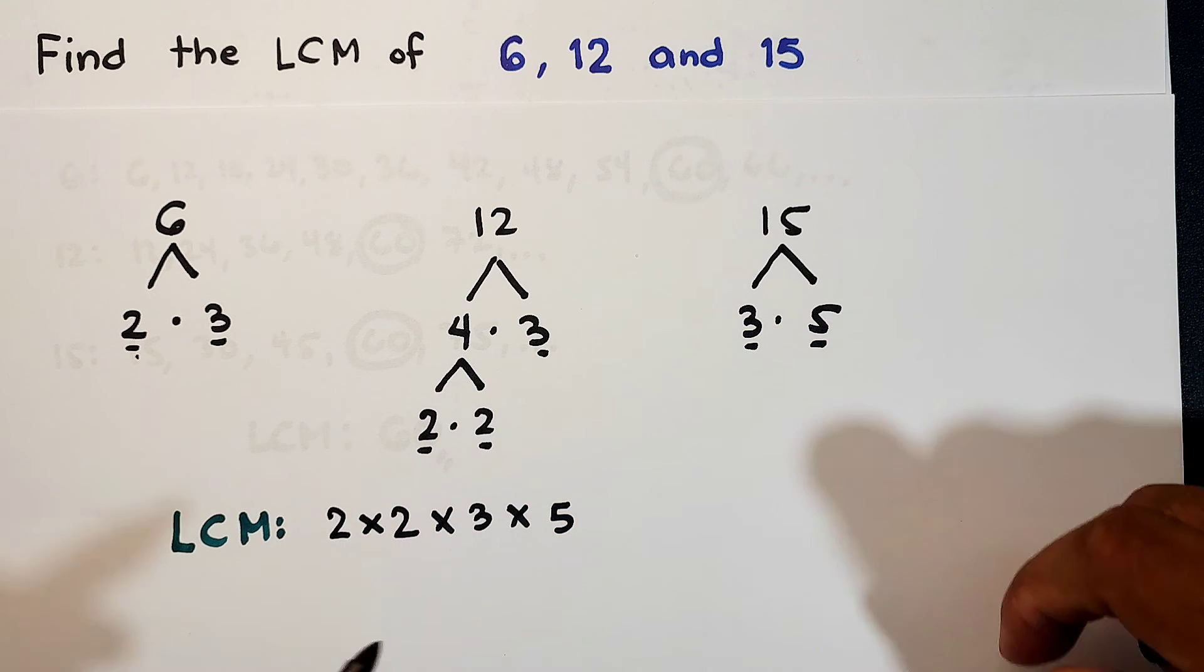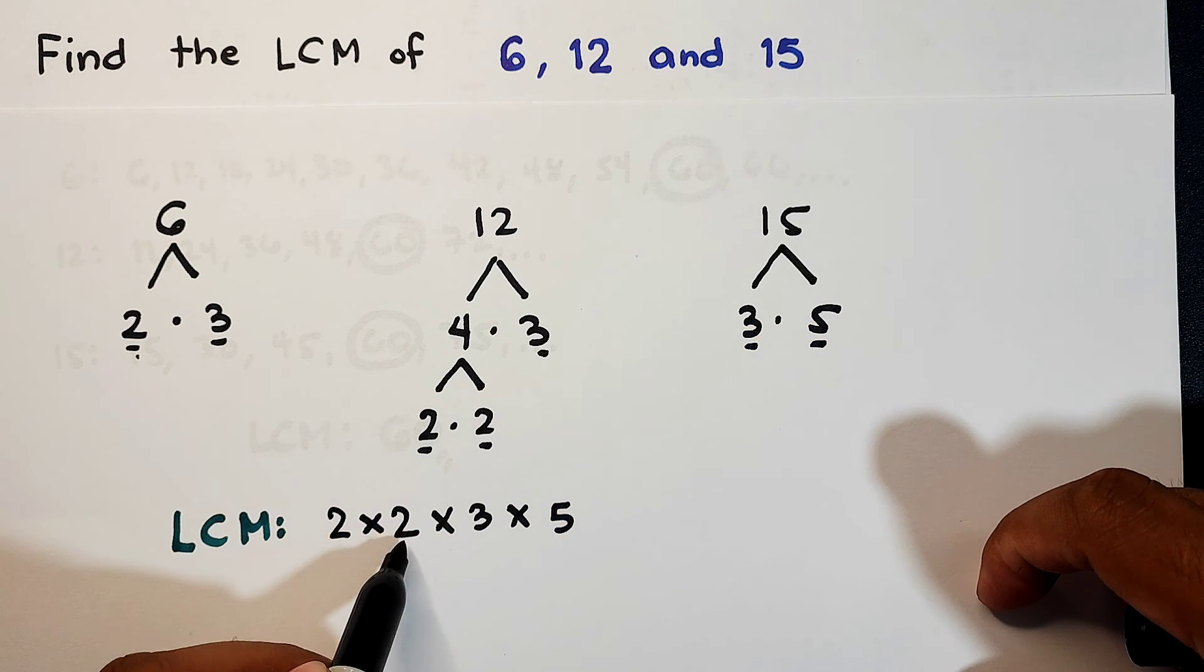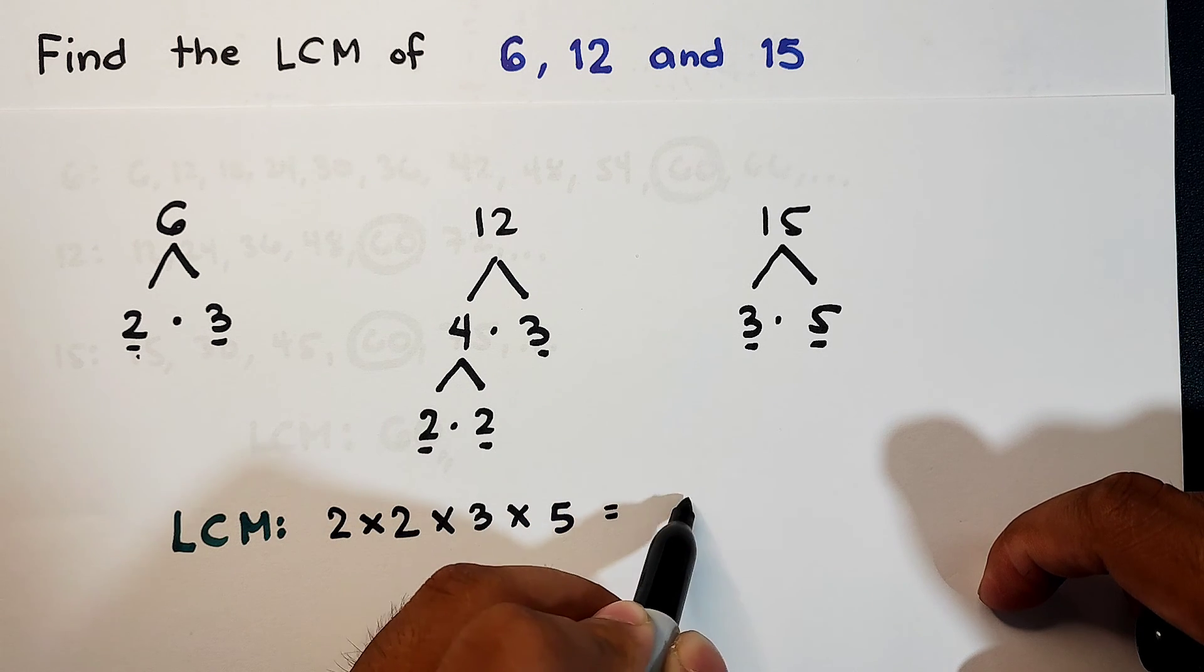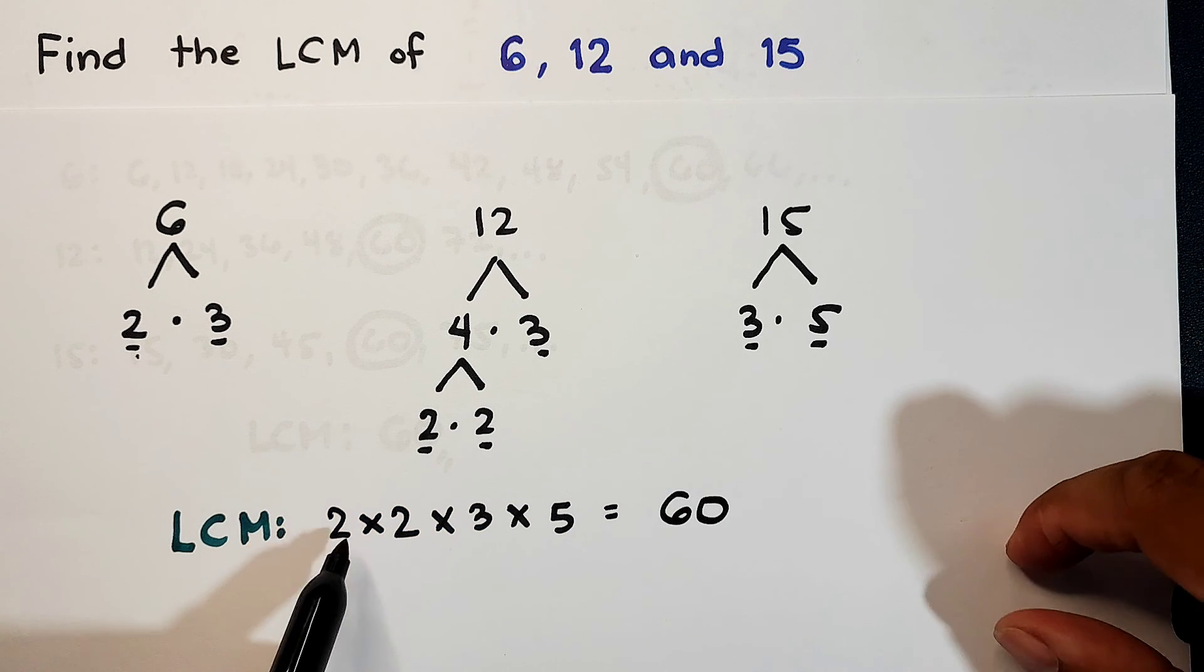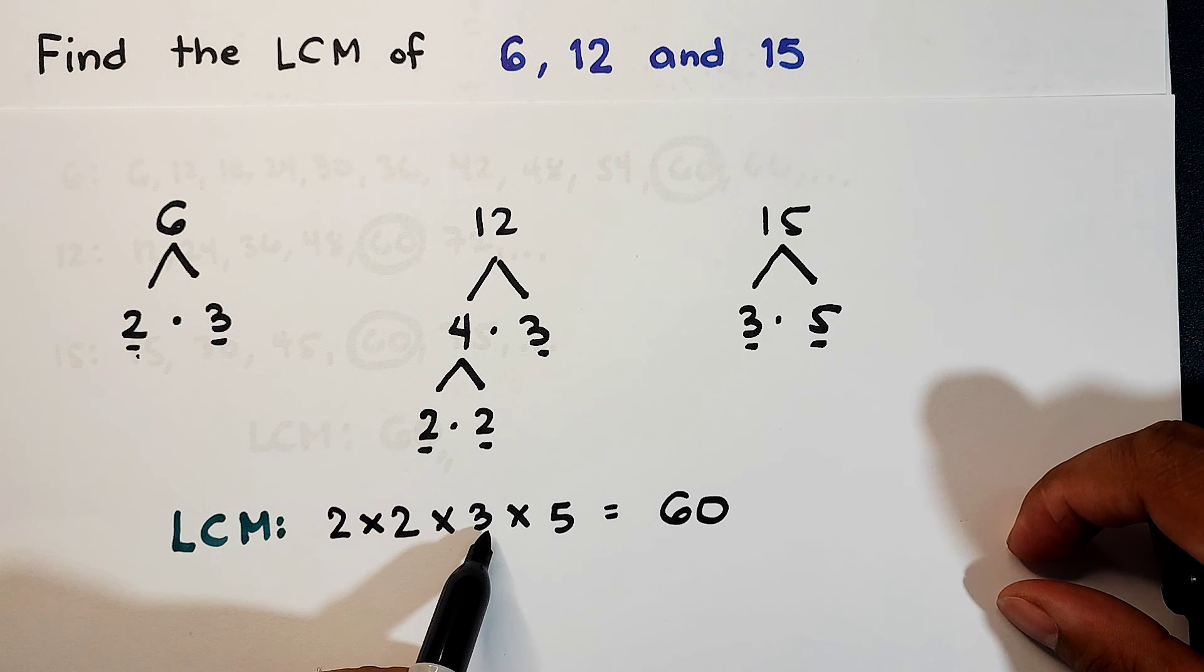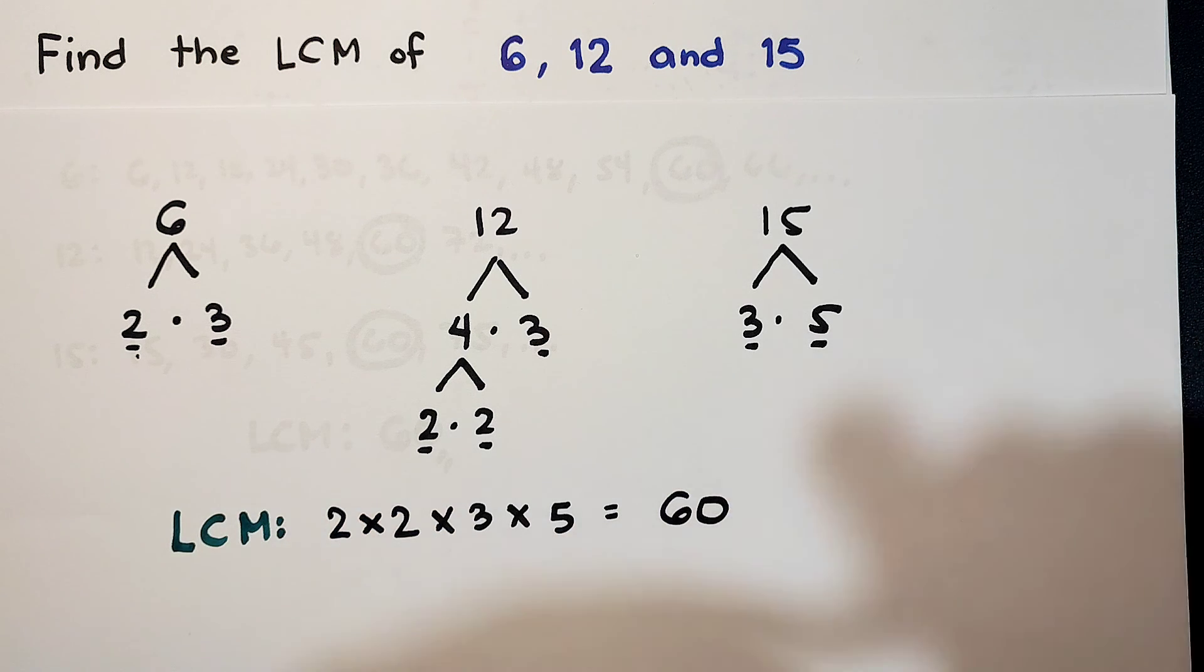So what we need to do is to multiply these numbers. 2 times 2 is 4, right? Times 3, which is 12, times 5, that is equal to 60. So again, 2 times 2 is 4, times 3 which is equal to 12, times 5 which is equal to 60.